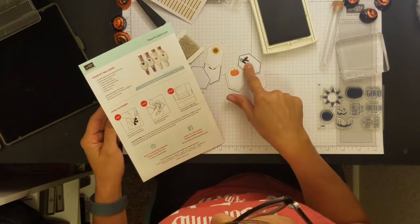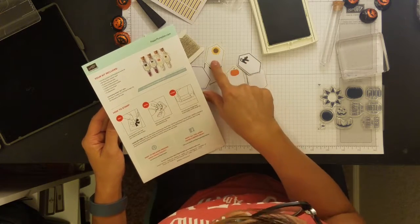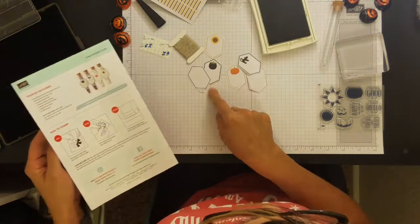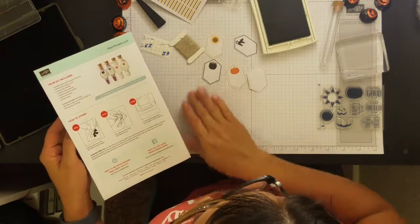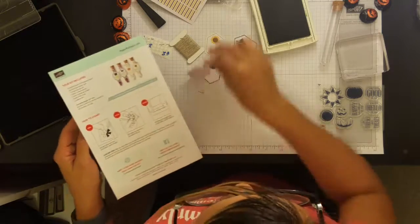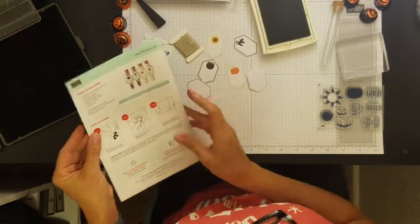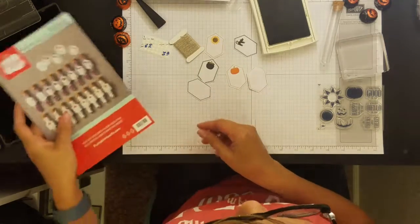So, we also have basic black, crushed curry is the yellow, the old olive, orange is the pumpkin pie, the rich razzleberry would be on these strips, and soft suede. Super cute.